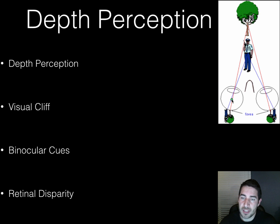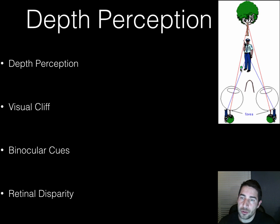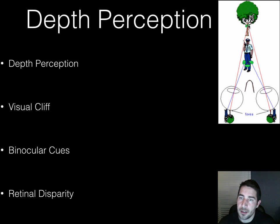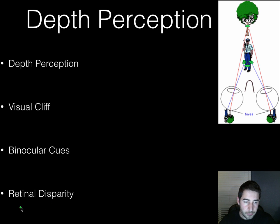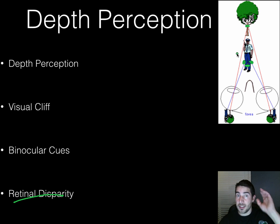Here's an example of what's happening: we have two eyes, and for an object that's closer — like a person nearby — there's a bigger gap between where each eye's line of sight hits that object. For something farther away, like a tree, those two points are much closer together. Because the two points are farther apart for the nearby object, our brain judges it to be closer. This difference between the two images hitting each retina gives us this idea called retinal disparity — disparity meaning the difference between the two images.